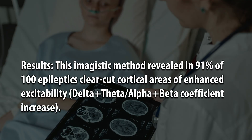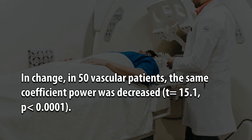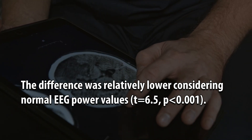Results: This imagistic method revealed in 91% of 100 epileptics clear-cut cortical areas of enhanced excitability, with delta plus theta and alpha plus beta coefficient increase. In contrast, in 50 vascular patients, the same coefficient power was decreased (t = 15.1, p < 0.0001).